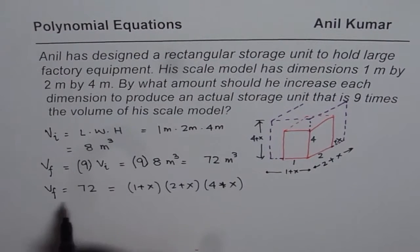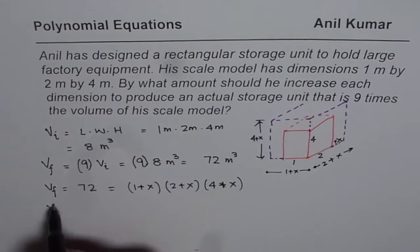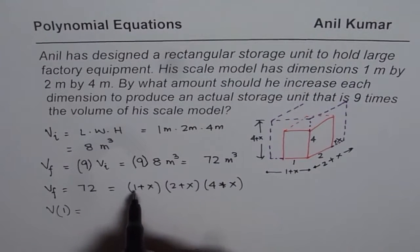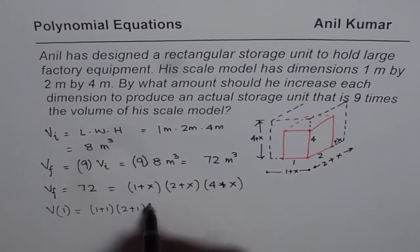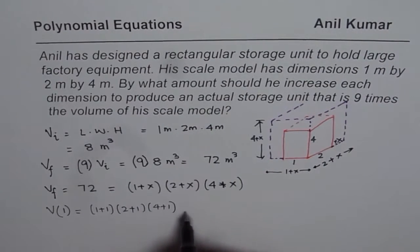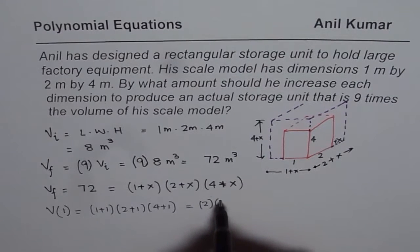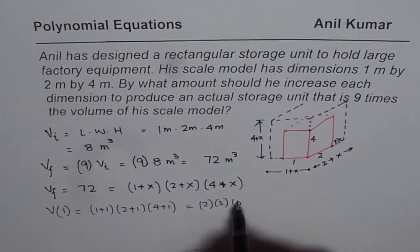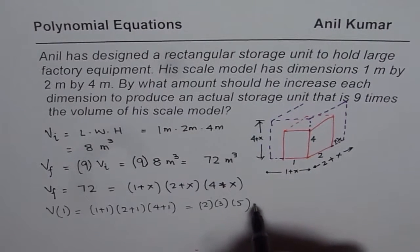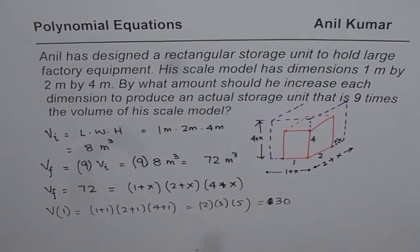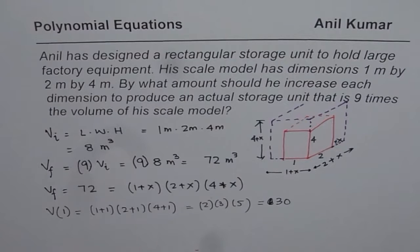So, let us say that the volume, we will substitute different values and then check. What is the volume when x is 1? So we will just substitute 1 here. So it is 1 plus 1 times 2 plus 1 times 4 plus 1. And that is, we have 2 times 3 times 5, which gives you 15 times 2 as 30. So 30 definitely is much lesser than what we need.